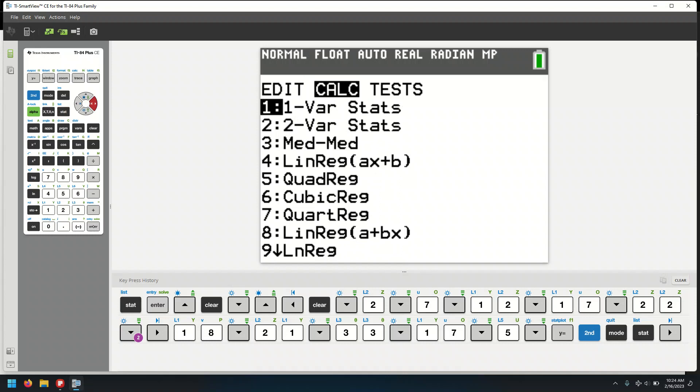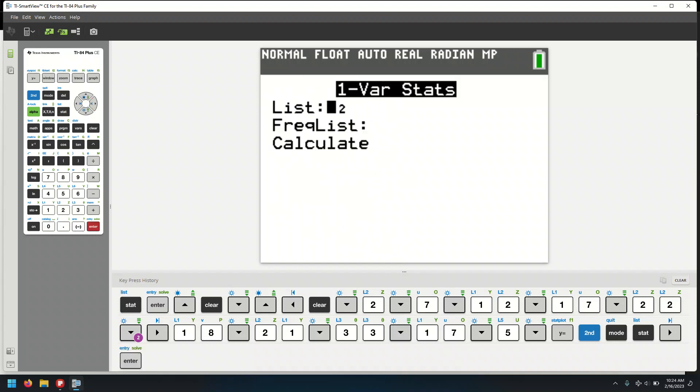So, in this case, let me change this to L1, second L1, because the list is L1 for the midpoints, and the frequency list is actually L2, second L2. And let's calculate.